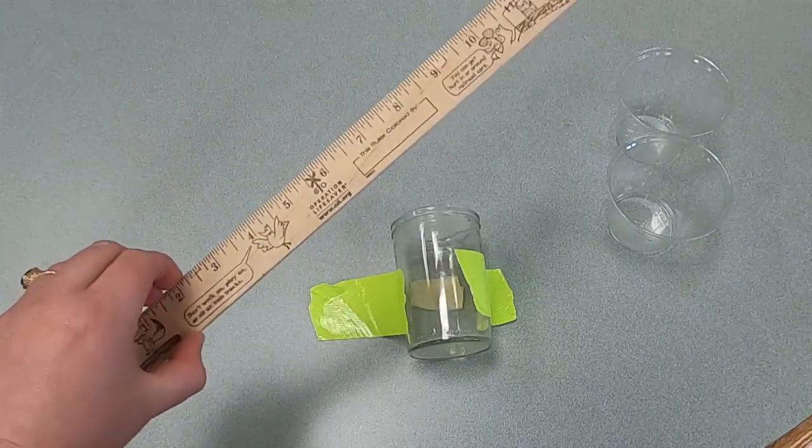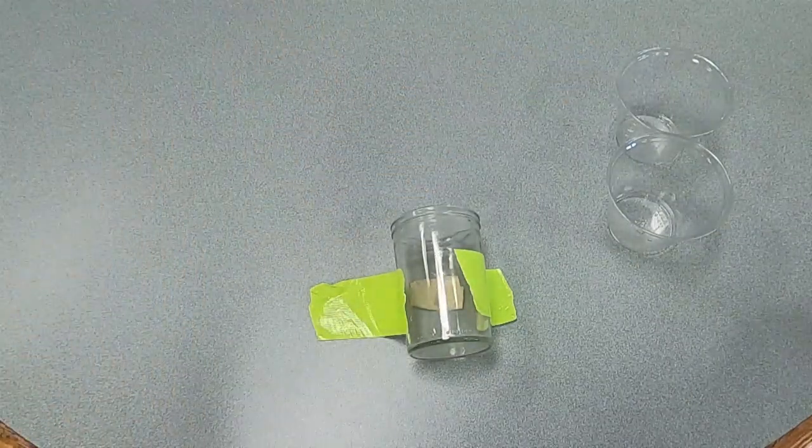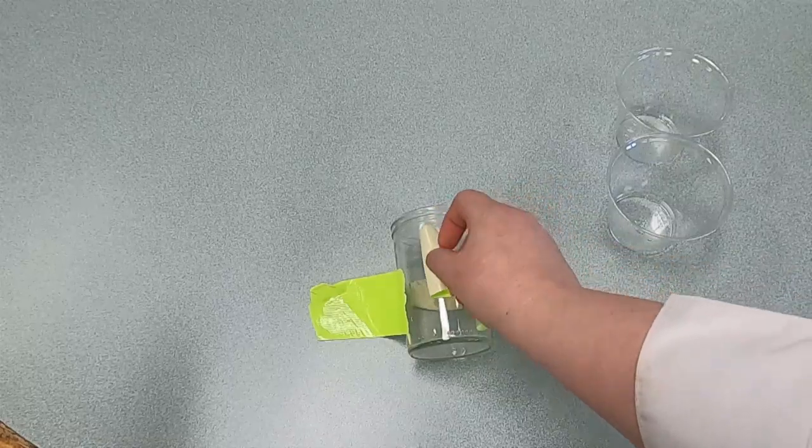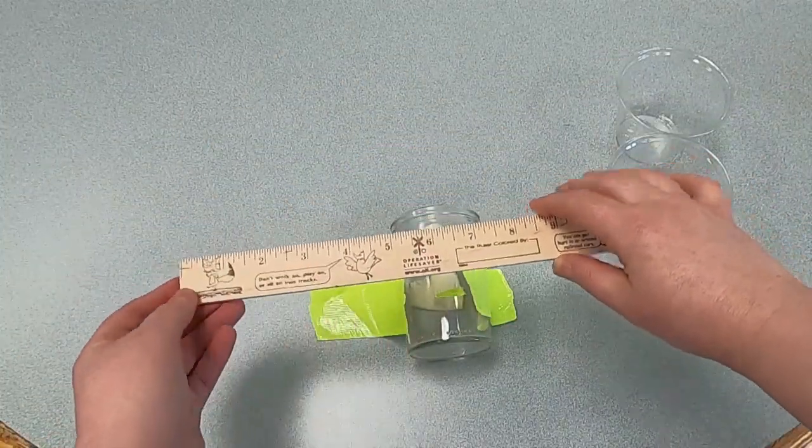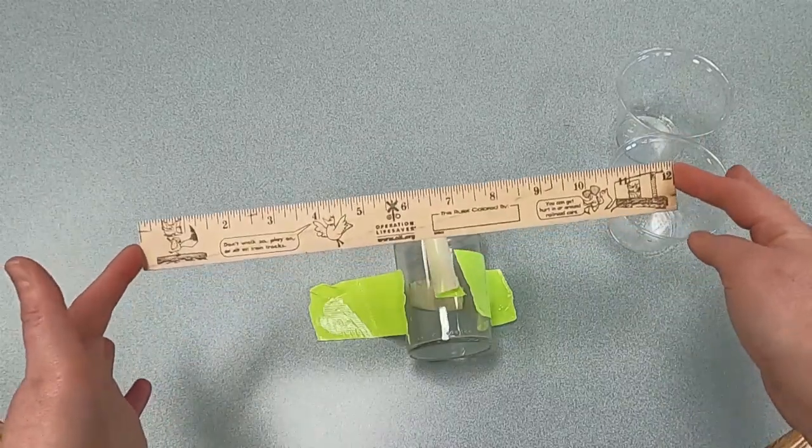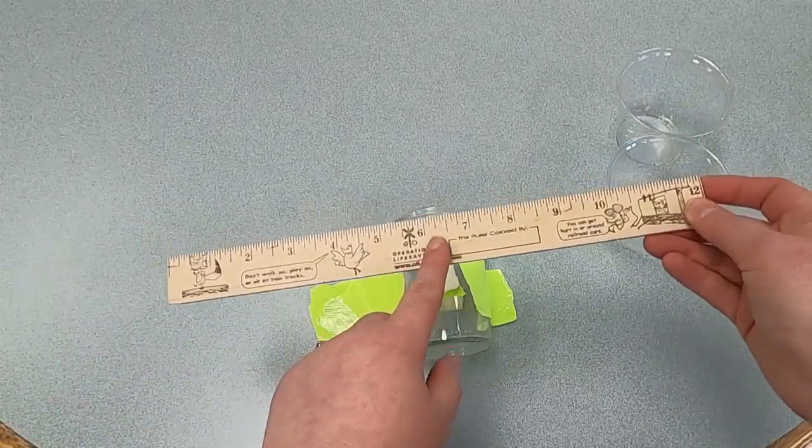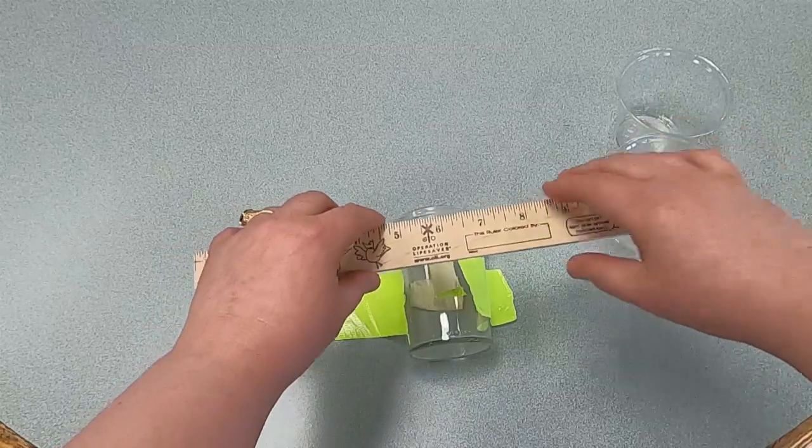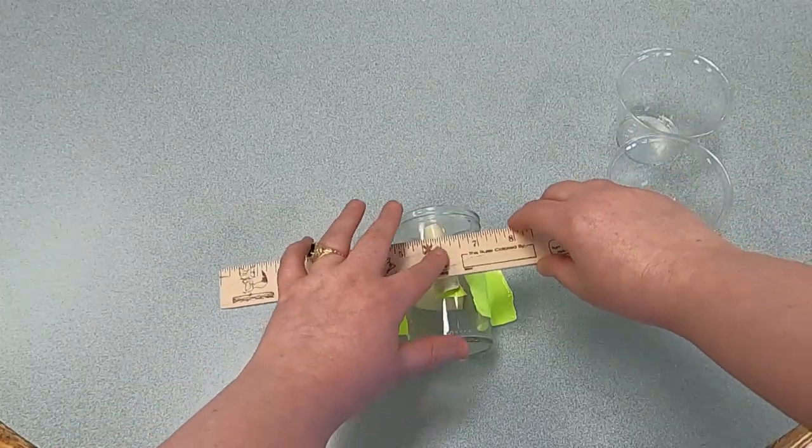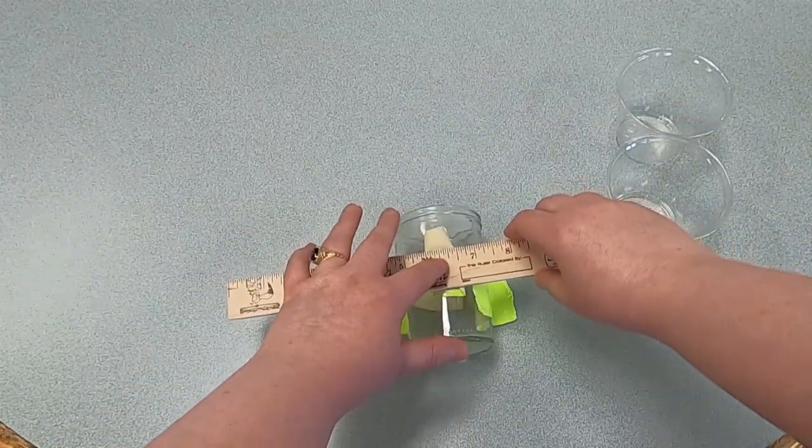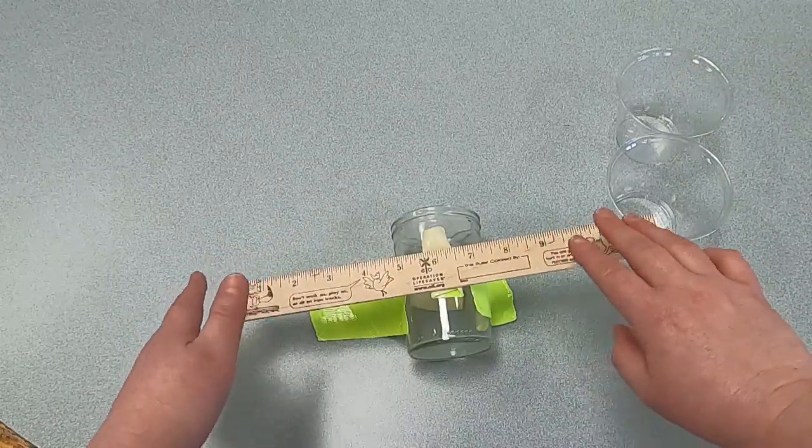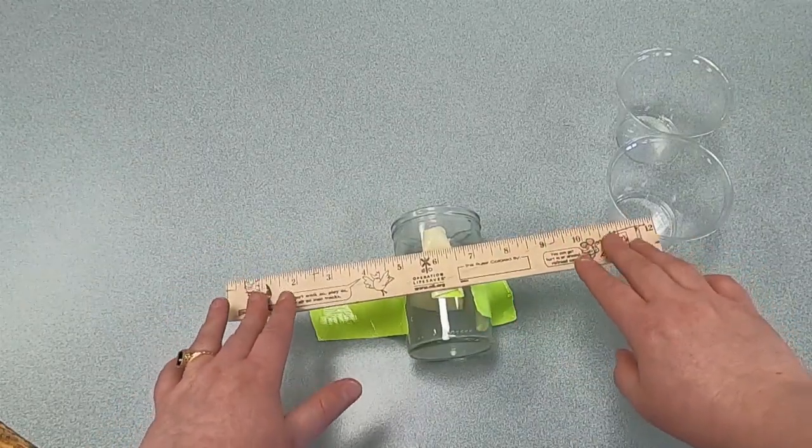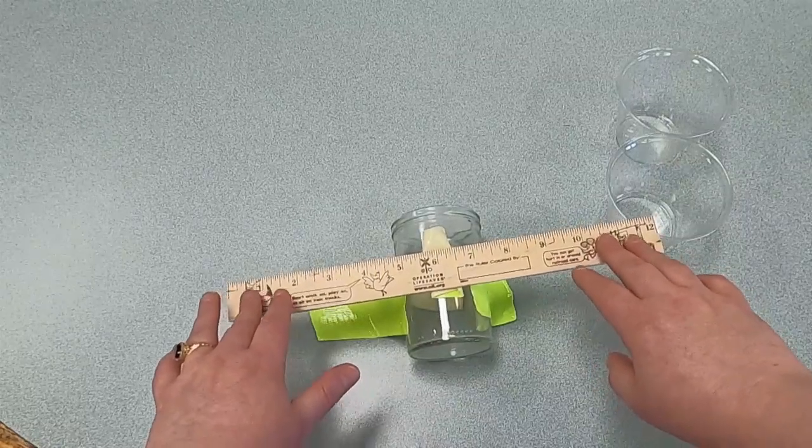Now we need to attach the lever, or the ruler, to the fulcrum. Since you want both sides to be even and a ruler is 12 inches, you want to look for the 6, which is halfway between, and put it on that piece of tape you just put on your jar. Put it down carefully, firm enough where it won't fall off, but not so tight that the lever won't move, because we want some wiggle room. And it looks like we got it.